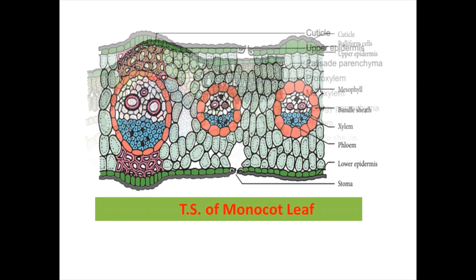Transverse section of dicot leaf: the cuticle on the upper epidermis is thicker than the lower surface. One layer of elongated cylindrical cells is called palisade parenchyma. The spongy parenchyma cells are loosely arranged. The vascular bundle is surrounded by a compact layer of thin-walled parenchymatous cells.